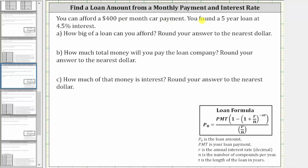You can afford a $400 per month car payment. You found a five-year loan at 4.5% interest. Part A: how big of a loan can you afford?